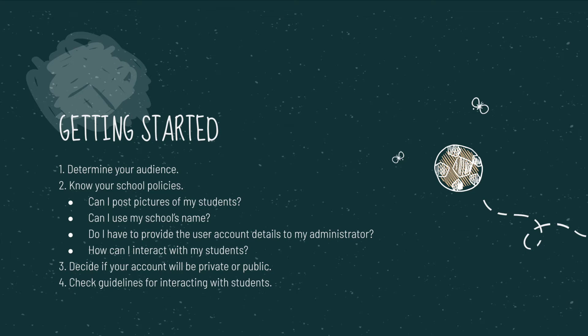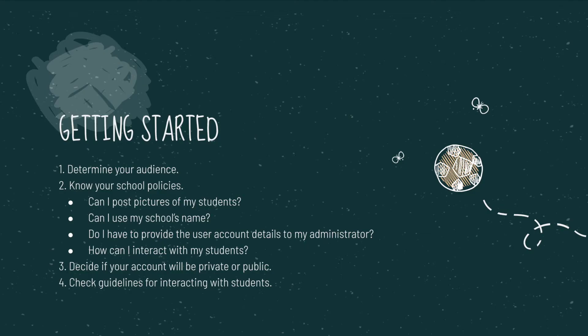The second one is to know your school policies. Every time we design OBTL or learning plans, all objectives should cascade from the goals and objectives of the university itself — from the mission, vision, and core values down to the department and subject level. Everything we implement in our classes should be aligned with school policies. Questions such as: Can I post pictures of my students? Can I use my school's name on social media? Do I need to provide user account details to my administrator? Are there provisions in the student or employee handbook about code of ethics regarding social media use?